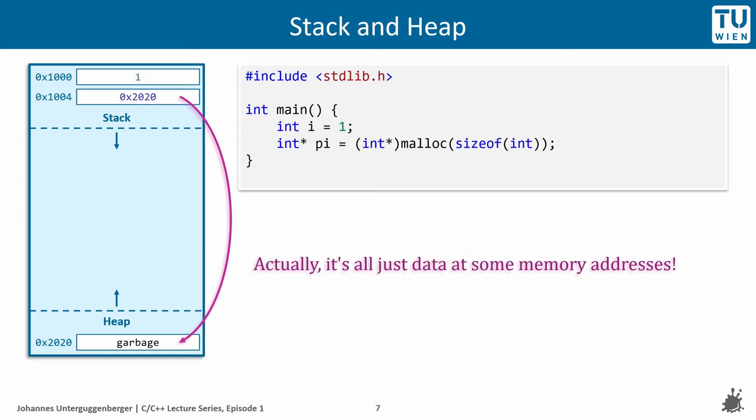We have not assigned any value to the heap-allocated variable, which we can do by dereferencing the pointer and assign a value through it. So we have to dereference the pointer pi to assign something to the memory it points to at the heap. But we also got the pointer variable on the stack.